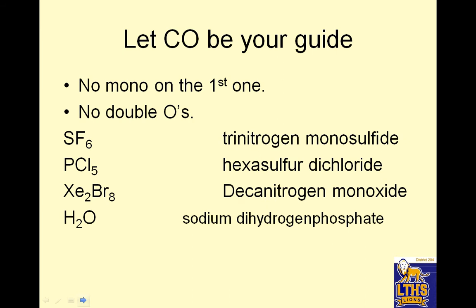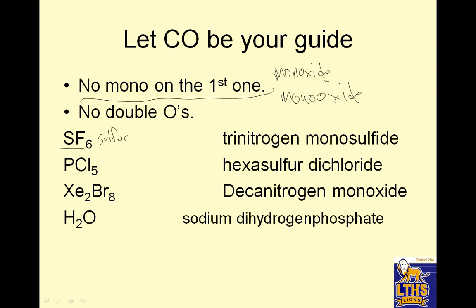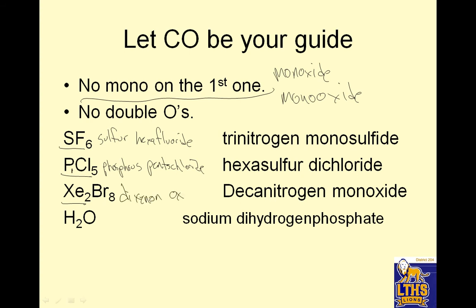Let carbon monoxide be your guide — there's no mono on the first element. So you can have di or tri or whatever it is. And there also will be no double vowels: monoxide, not monooxide. So if I were to name these: SF6 would be sulfur hexafluoride — no prefix because it's 1. Phosphorus pentachloride — no prefix because the first one is 1. Dizenon octobromide. Notice how I just have them end in -ide and sound good. So fluorine becomes fluoride, chlorine becomes chloride.